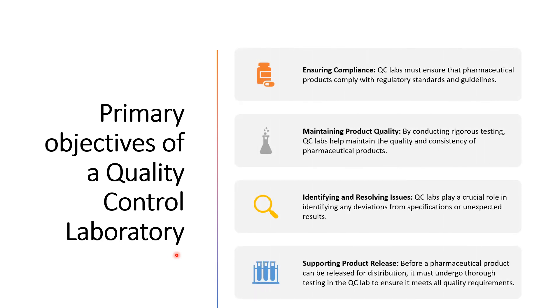In this slide we will discuss the primary objectives of a quality control laboratory. The first objective is ensuring compliance — the QC lab must ensure that pharmaceutical products comply with regulatory standards and guidelines. This involves performing tests according to approved protocols and documenting results accurately. The second objective is maintaining product quality — by conducting rigorous testing,